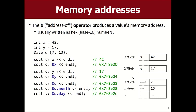You can ask for the memory address of any value in C++ using the ampersand address-of operator. If you print x, it prints 42 — the value. If you print the address of x, it prints the hexadecimal address. You can also print the address of a structure and the addresses of its individual member variables. Interestingly, the first variable of a structure has the same memory address as the structure itself, and the second variable has an address a few bytes ahead.